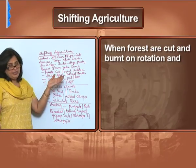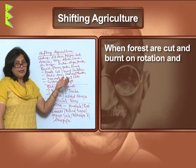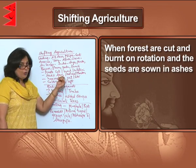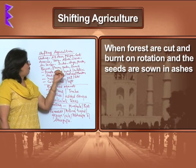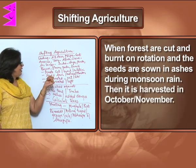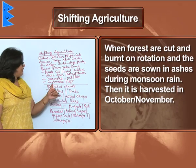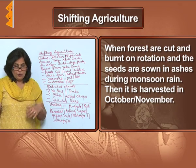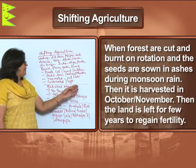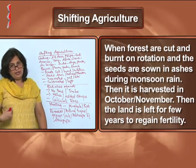Shifting agriculture is when forests are cut and burnt on rotation, and seeds are sown in the ashes of whatever was burnt during the monsoon rains. It is then harvested in the months of October and November. This cultivation continues for a few years and then the land is left fallow for a few years.